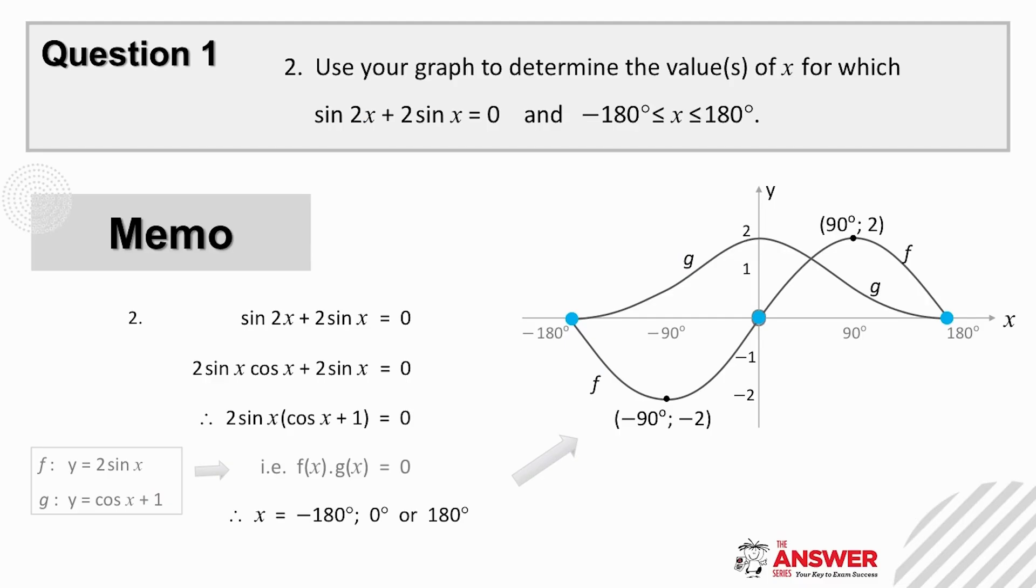For the second part of question 1, you may at first glance have wondered how on earth you're meant to use your graphs to solve this equation. Let's have a look at what happens when you expand this sine double angle here. Once you've expanded, then on the left you now have terms which you can factorize, and once factorized using common factor, you now have the product of f and g. In other words, for their product to be zero, they are wanting the solution for x where either one or both graphs is zero over this interval.